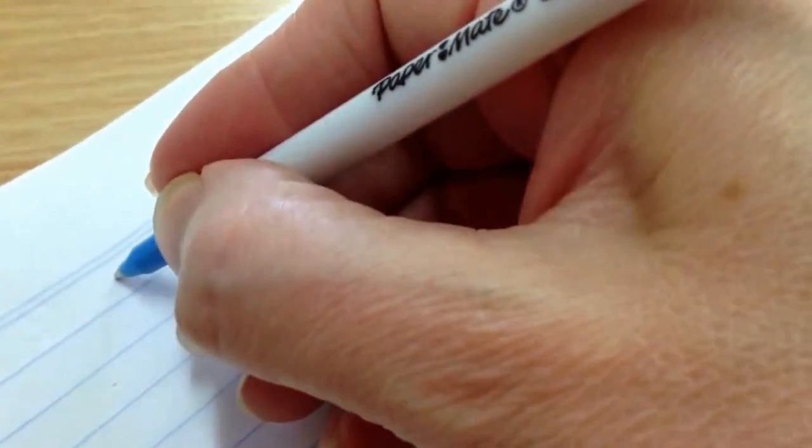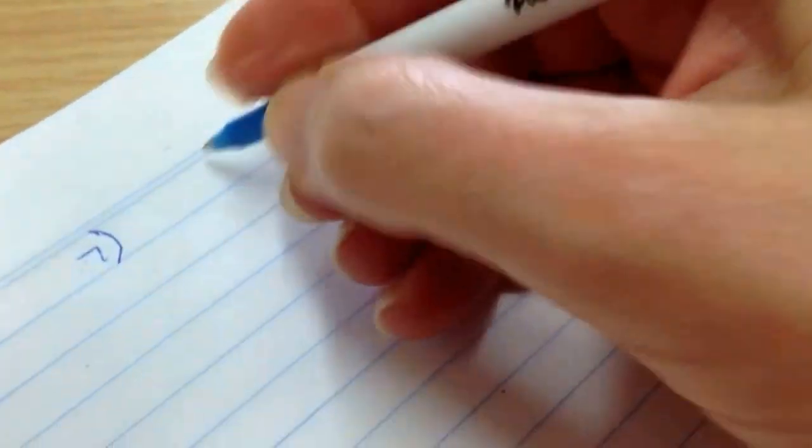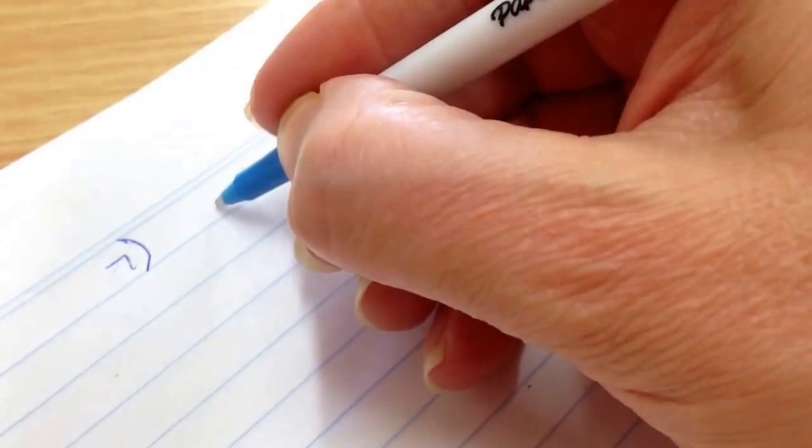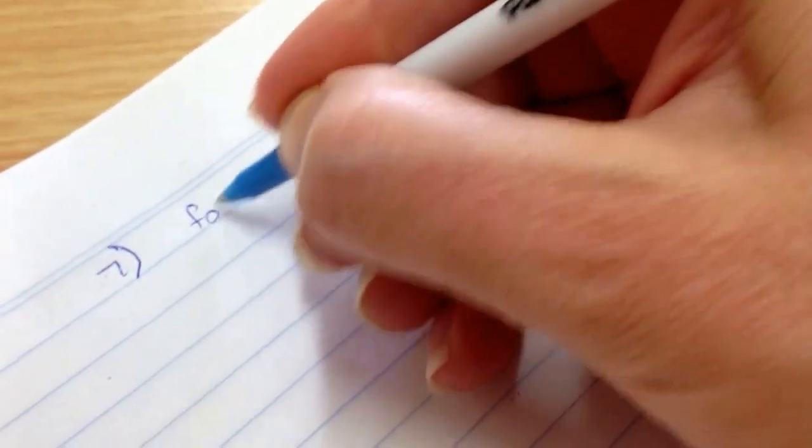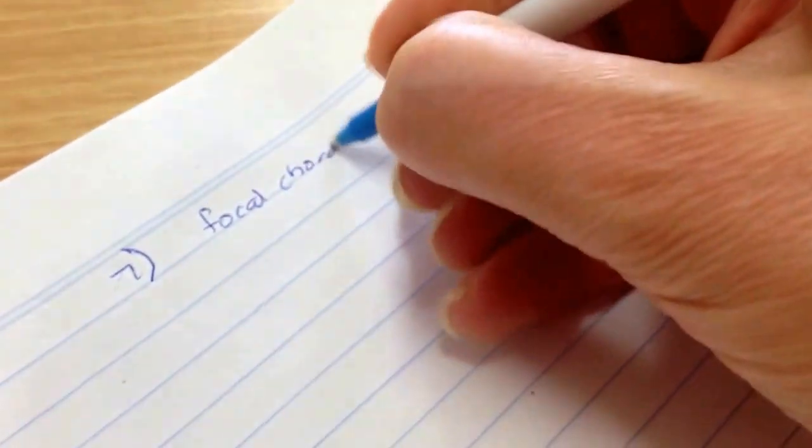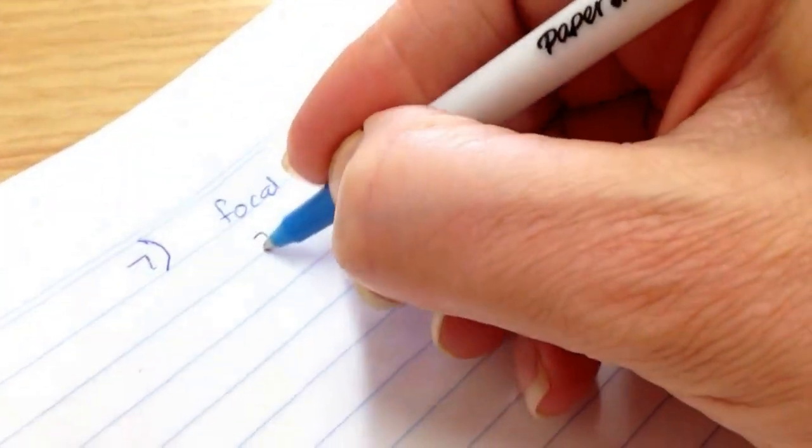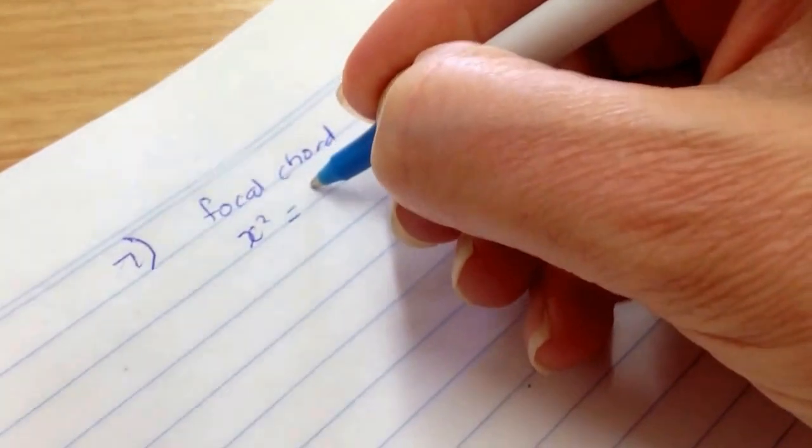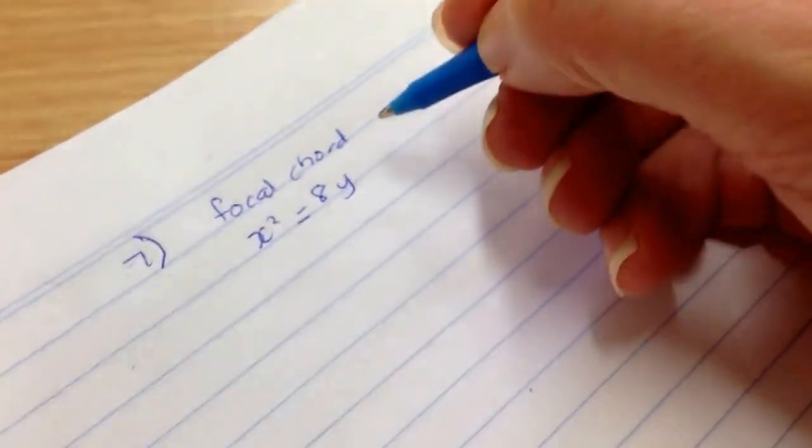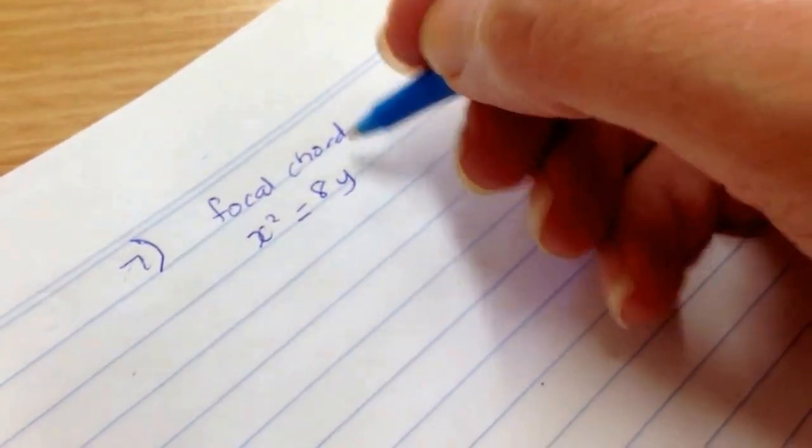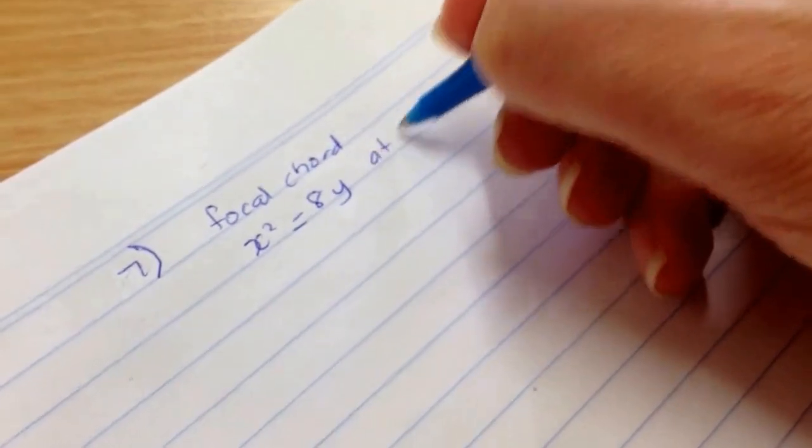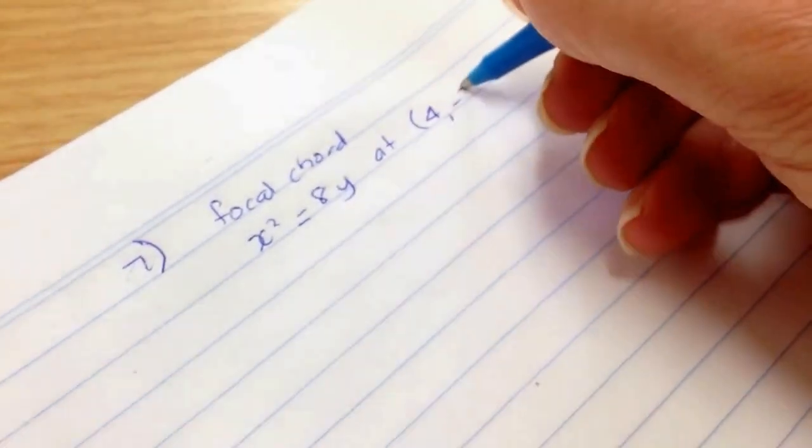Okay, question 7 says: find the equation of the focal chord that cuts the curve x squared equals 8y at the point 4 minus 2.